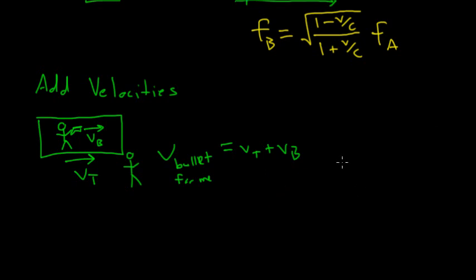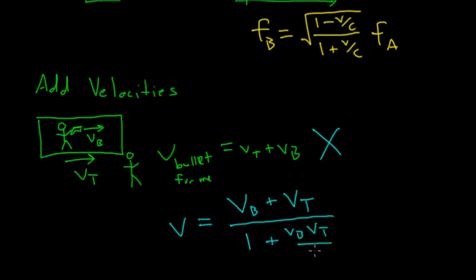But in special relativity, special relativity says that this answer is going to be wrong. The velocity that will be given through special relativity is the velocity of the bullet plus the velocity of the train over 1 plus the velocity of the bullet times the velocity of the train over c squared.